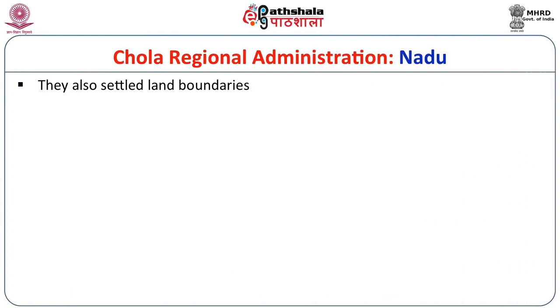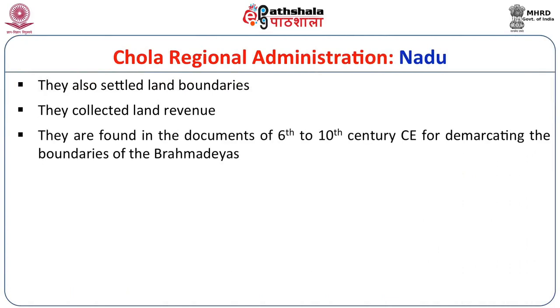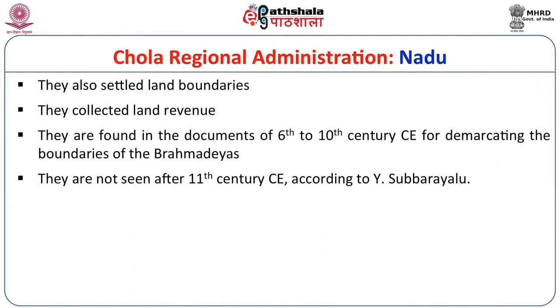The Natars settled land boundaries and disputes and collected land revenue. They are found in documents from the early period, roughly the 6th to 10th century CE, and were employed for demarcating the boundaries of Brahmadeyas. While the king was in the capital, he sent orders to the Natars to execute them on the ground, especially when lands were given to Brahmanas. Professor Subbarayalu has studied these inscriptions and notes the term Natar becomes rare after the 11th century, suggesting the institution of Natar declined in the later Chola period, possibly as central authority took over control.